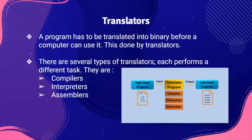Moving on to the next topic, we have translators. A translator is a program that converts high level language to binary so that the computer can understand and use it. There are several types of translators, each performing a different task: compilers, interpreters, and assemblers. The image shows a high level program as input, the translator program processes it, and the output is the low level program that the computer can understand and execute.